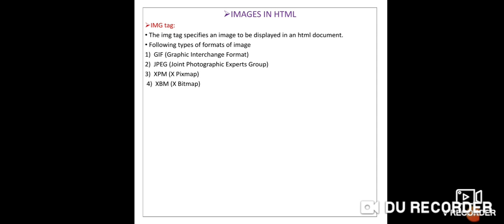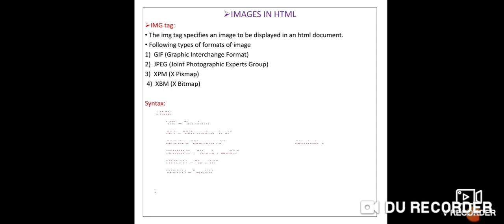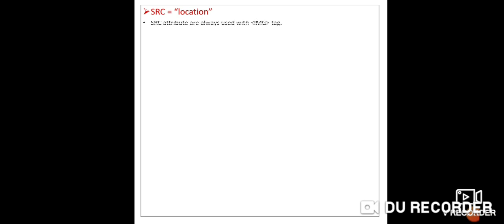Now, what is the syntax to insert an image in an HTML document? In angle brackets, write IMG — that is the main tag. The attributes of IMG are: SRC, ALT, align, border, height, and width. The SRC attribute denotes the source path — the location of the image.